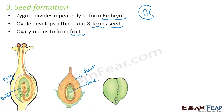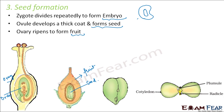Looking at the structure of the seed: within itself it contains a tiny plumule and a radicle. The plumule is a tiny shoot and the radicle is a tiny root. The seed is capable of giving rise to a new plant because the tiny shoot and root will grow and develop into a new plant. Cotyledons are the seed leaves — they provide nutrition to the tiny shoot and root so they can grow. Seeds available in the market are obtained from other plants; they are the ovules of those flowers after fertilization.